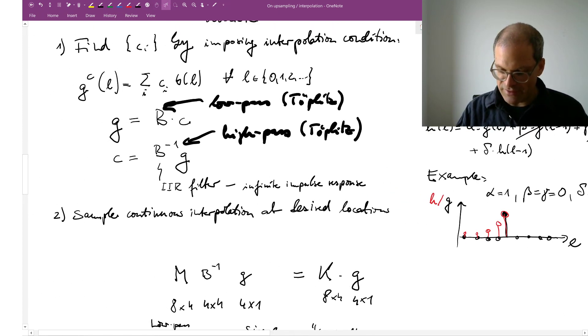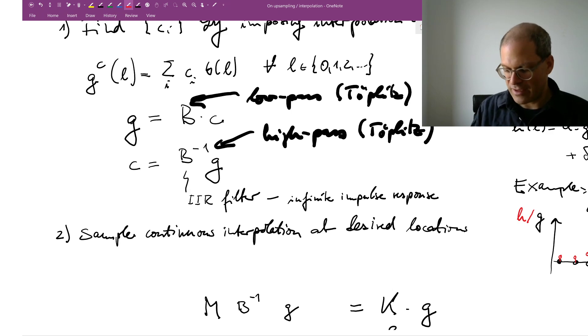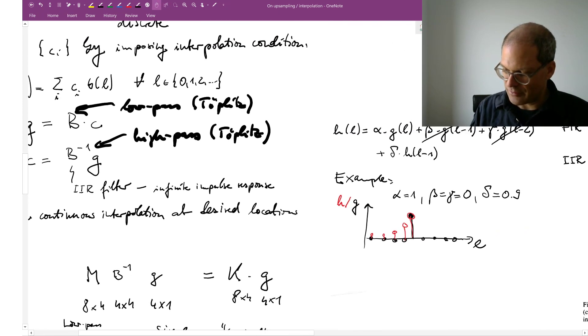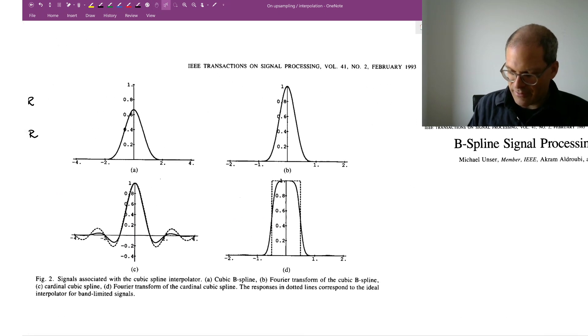Now it turns out, as I said, that this high-pass filtering here, you don't need to actually invert this Toeplitz matrix capital B, but instead you can implement this cleverly in terms of an infinite impulse response filter. And I'm showing you the effect here in a classical paper from Michael Unser. He's a great signal and image processing expert from Lausanne, and by the way he was in Heidelberg two years or so ago as a visiting professor for a semester on his sabbatical. He's a great mathematician.